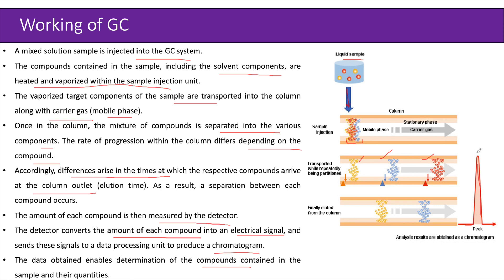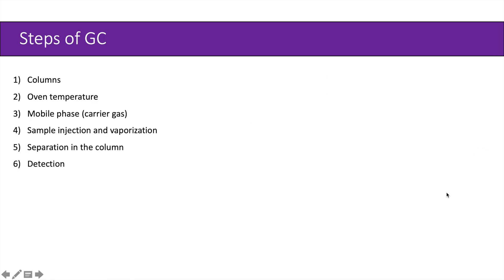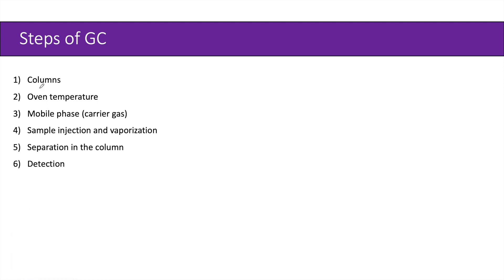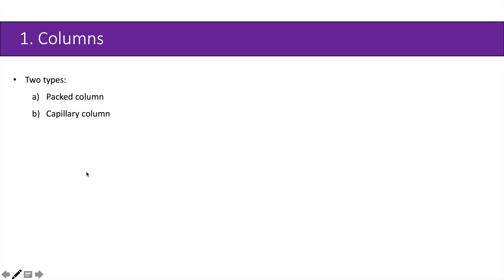Now we will see the important steps of GC. These include: column preparation, oven temperature maintenance, introduction of the mobile phase or carrier gas, sample injection and vaporization, separation in the column, and then detection. We will discuss all these steps one by one. First are the columns — two types of columns are mainly used in gas chromatography: packed columns and capillary columns.